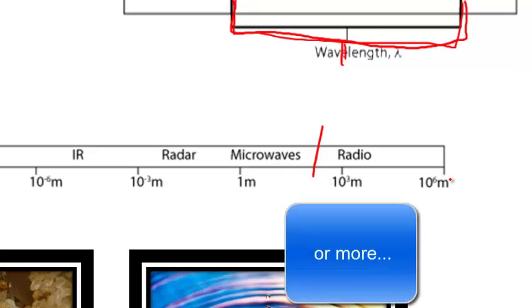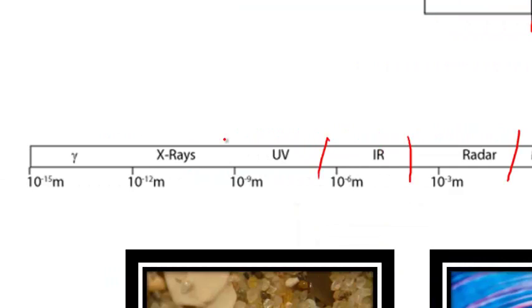So we might have radio waves that have 10 to the 3 to 10 to the 6 meter wavelengths, really long wavelengths, microwaves, radar waves, infrared, UV, X-rays, gamma rays that make the Hulk.